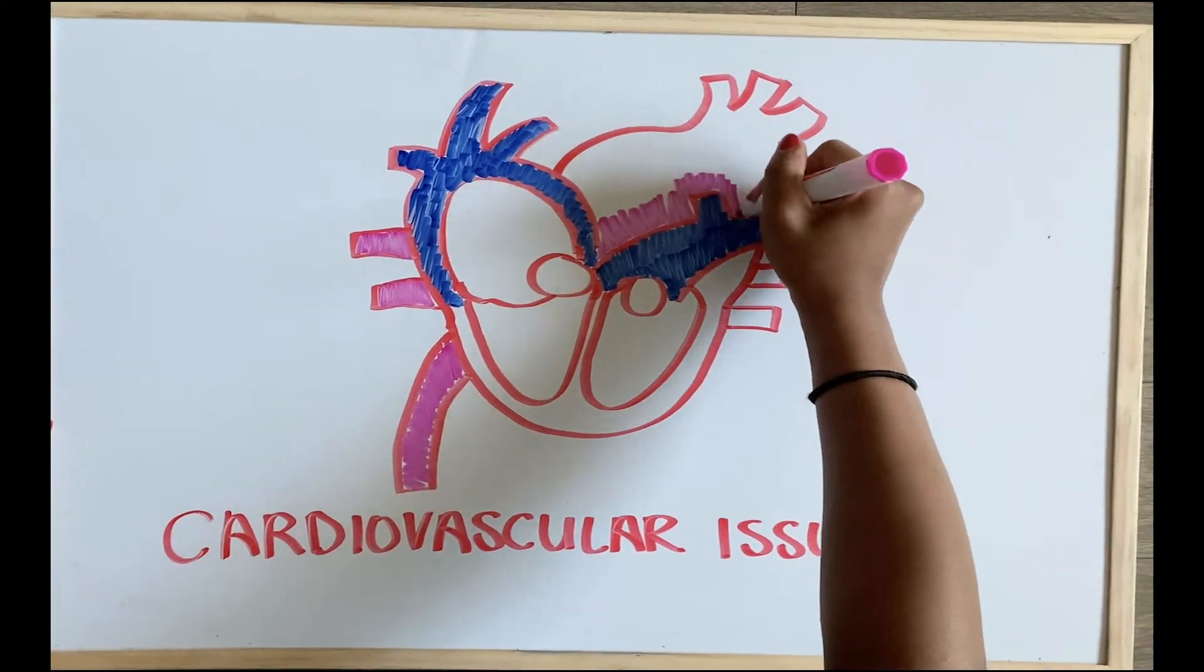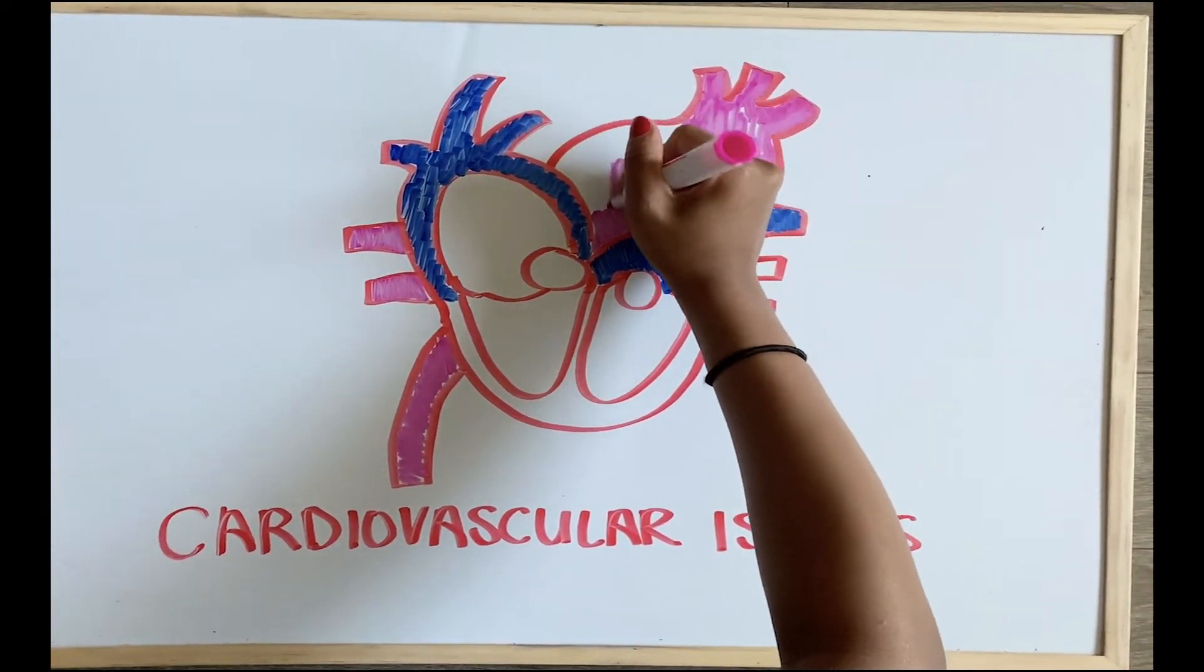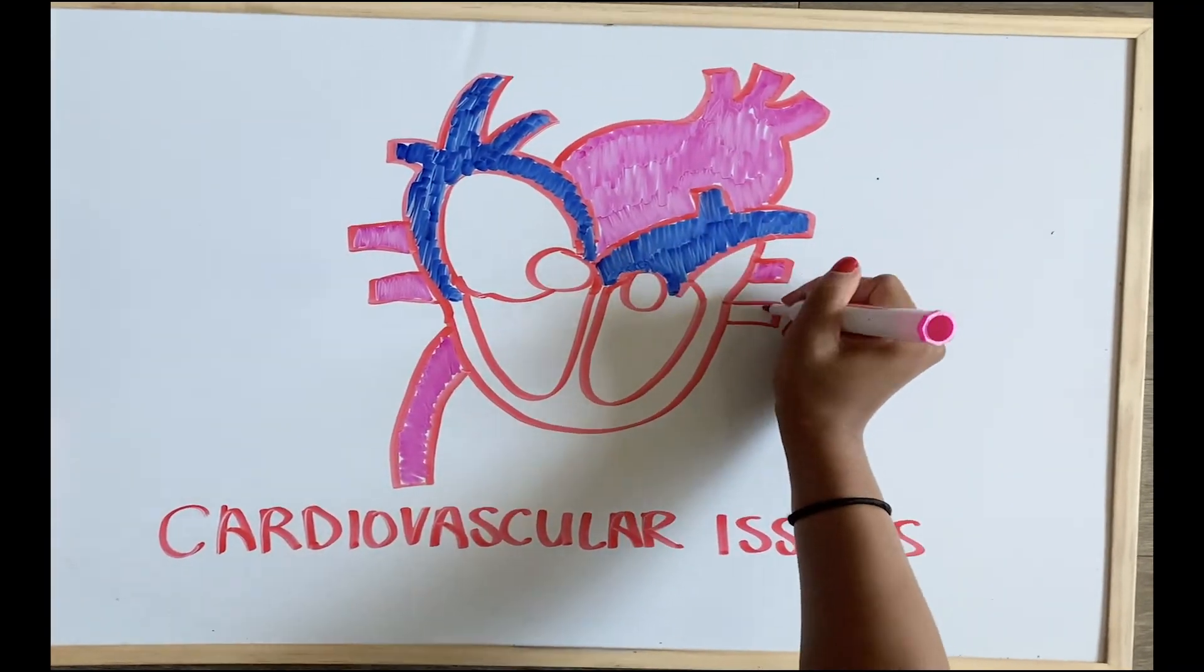Women with Turner syndrome are also at risk of aortic dissection, a serious condition in which there is a tear in the wall of the aorta.